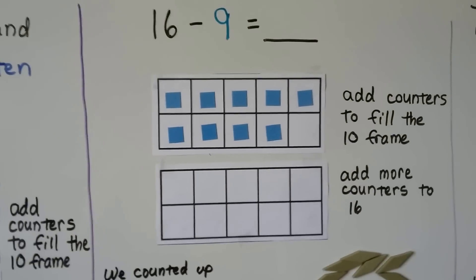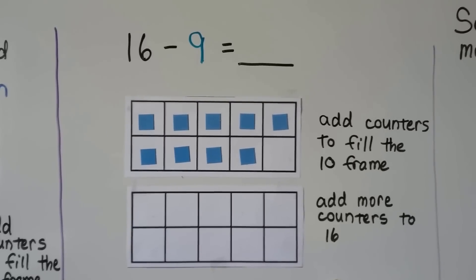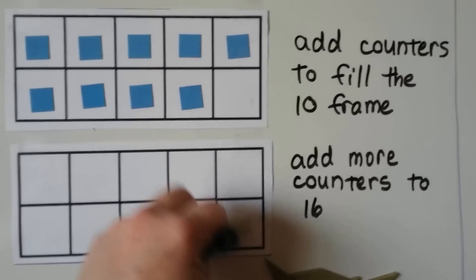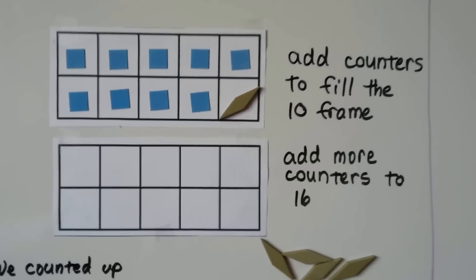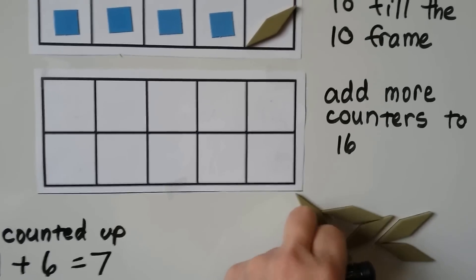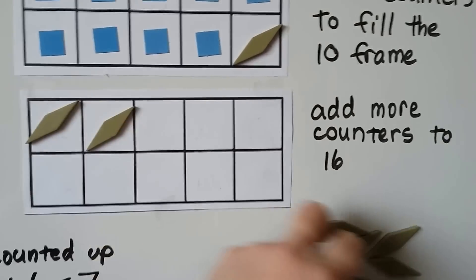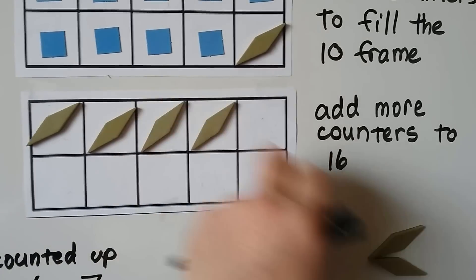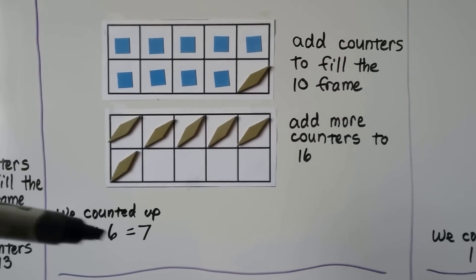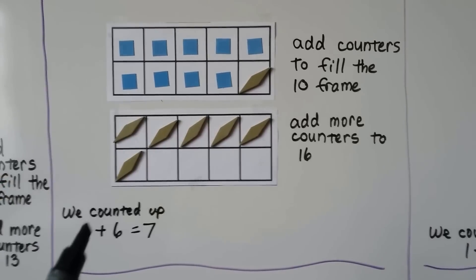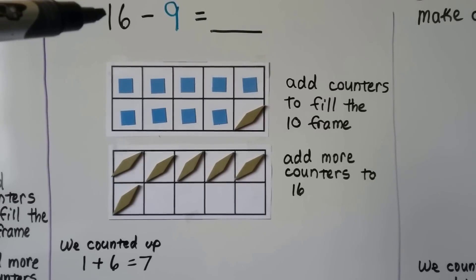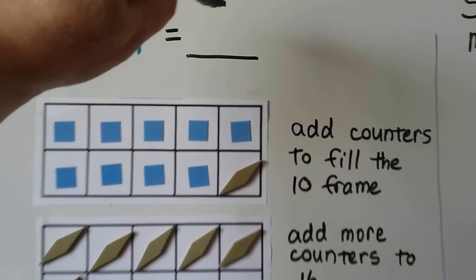Here we have 16 minus nine. We start with nine counters and add counters to fill the 10 frame — nine, and one more is ten. Then we add more counters up to 16: ten, eleven, twelve, thirteen, fourteen, fifteen, sixteen. We counted up one and six more — one plus six is seven. So 16 minus nine is equal to seven.